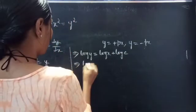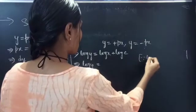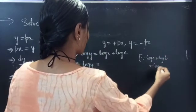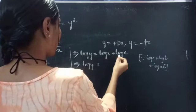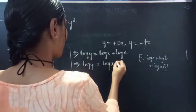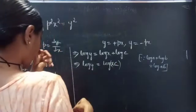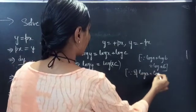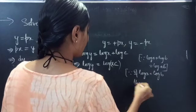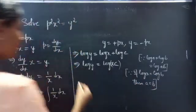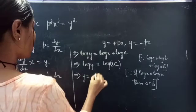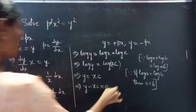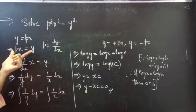Then, log y equals log x plus log c. We know that log a plus log b equals log(ab), so log x plus log c can be written as log(xc). Also, if log a equals log b, then a equals b. Therefore we get y equals xc, or y minus xc equals 0, which is the solution for y equals px.